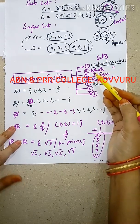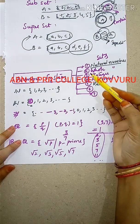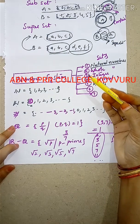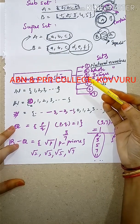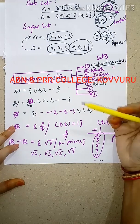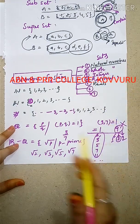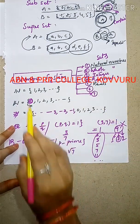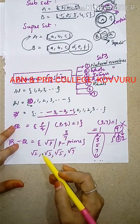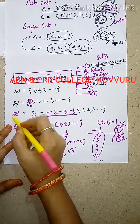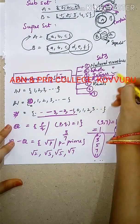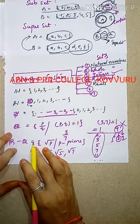We can also find negative numbers such as minus 2, minus 5, minus 6. Including these negative numbers gives us the set of integers. The set of integers is a very important concept.